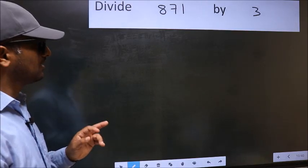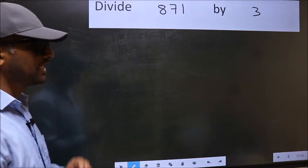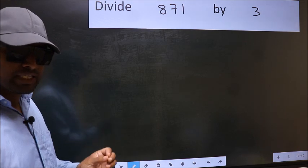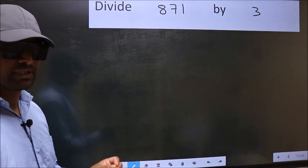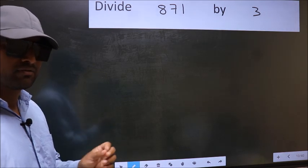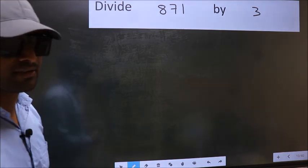Divide 871 by 3. While doing this division, many do this mistake. What is the mistake that they do? I will let you know. But before that, we should frame it in this way.